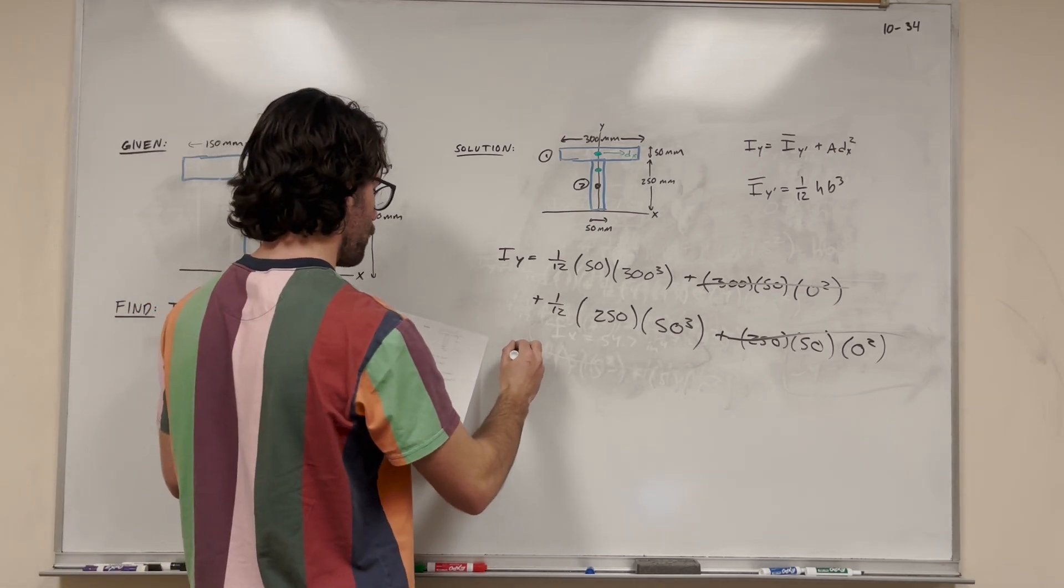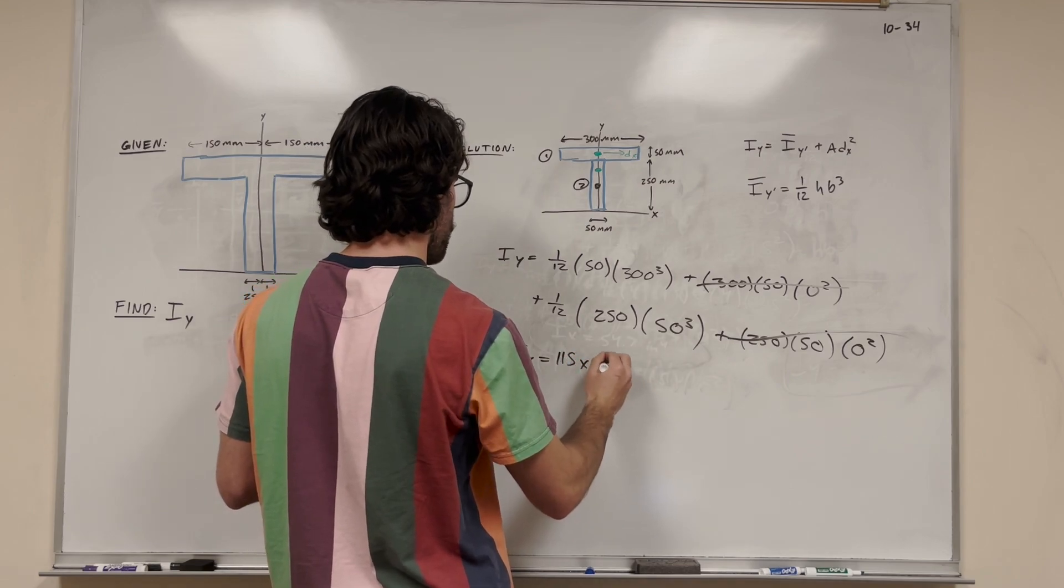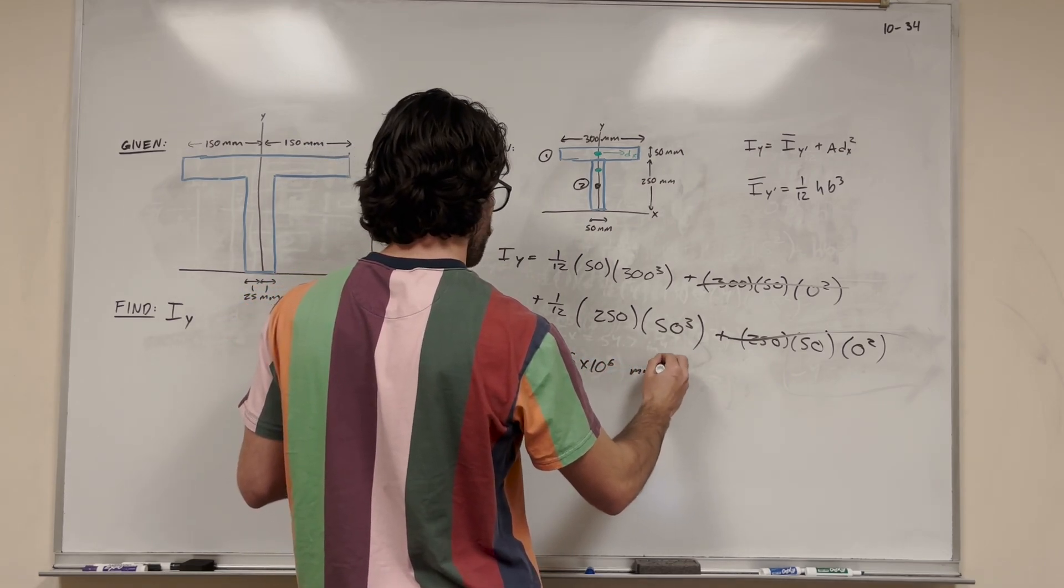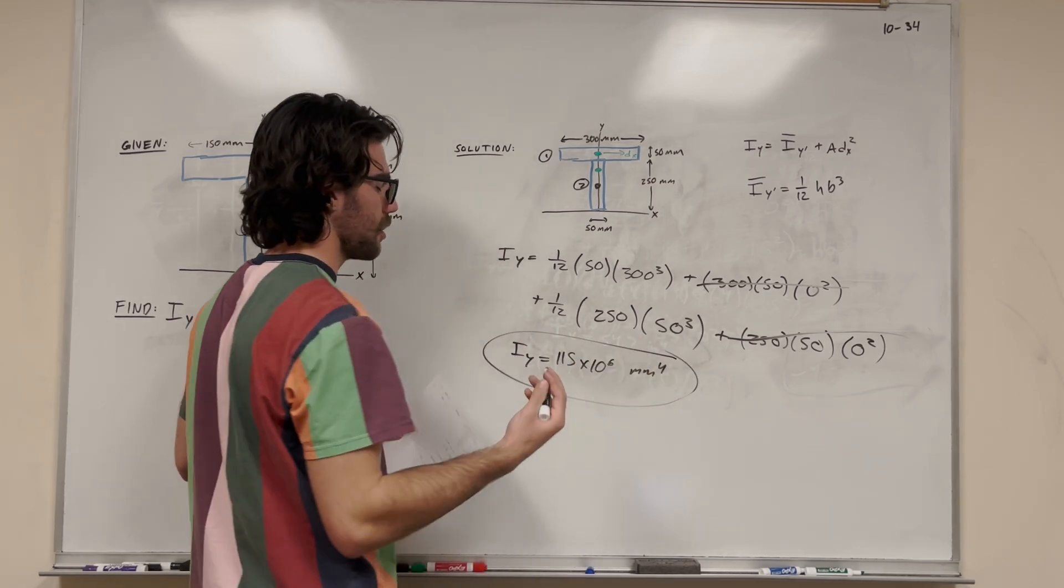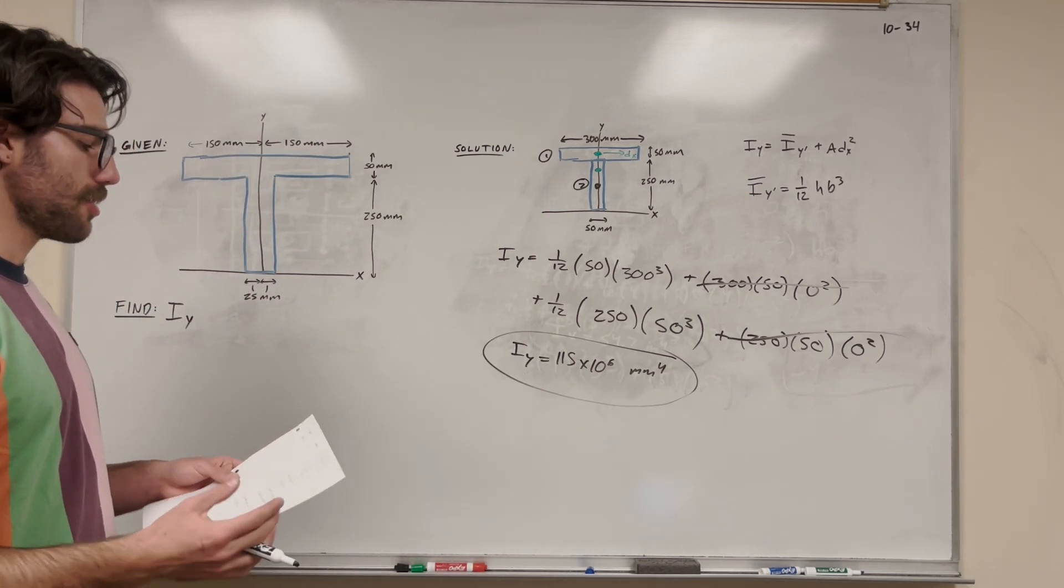So if you do all this, we're going to find that Iy equals 115 times 10 to the 6th millimeters to the 4th. You can convert that to meters to the 4th if you want to, but I just kept it millimeters to the 4th. And there's your answer. So it's really that simple.